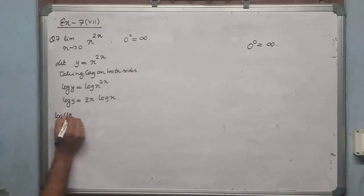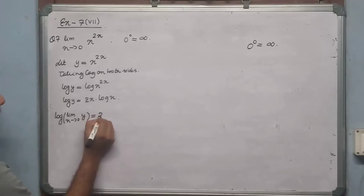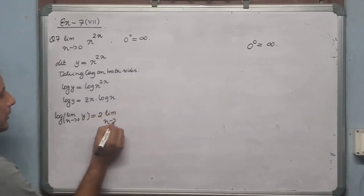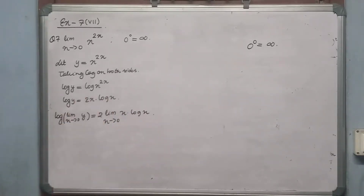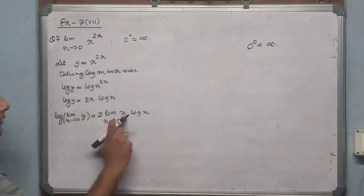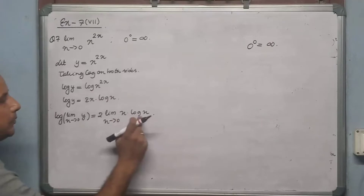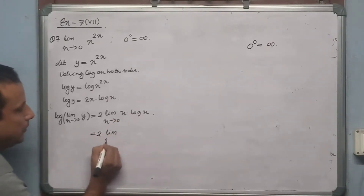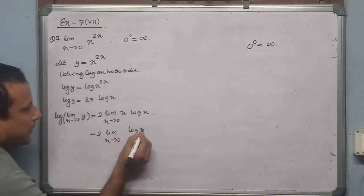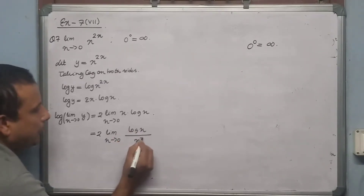Now substituting the limit: limit x tends to 0 of log y equals limit x tends to 0 of 2x·log x. To use L'Hospital's theorem, we must convert to numerator over denominator form. So we write log x in the numerator and x^(−1) in the denominator.